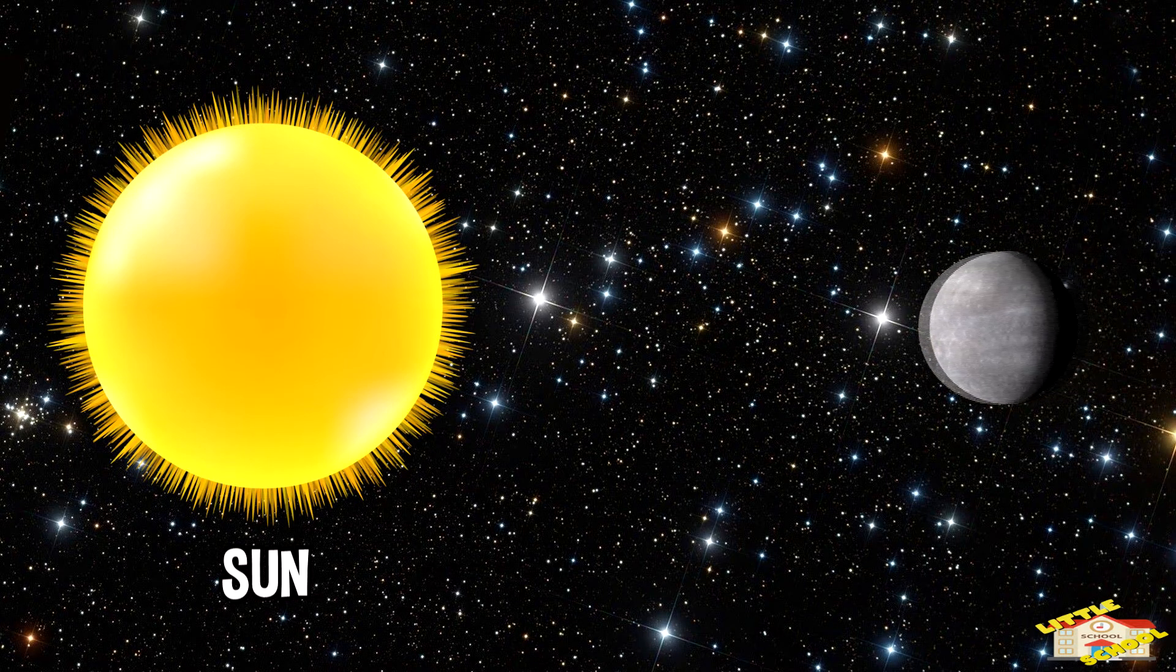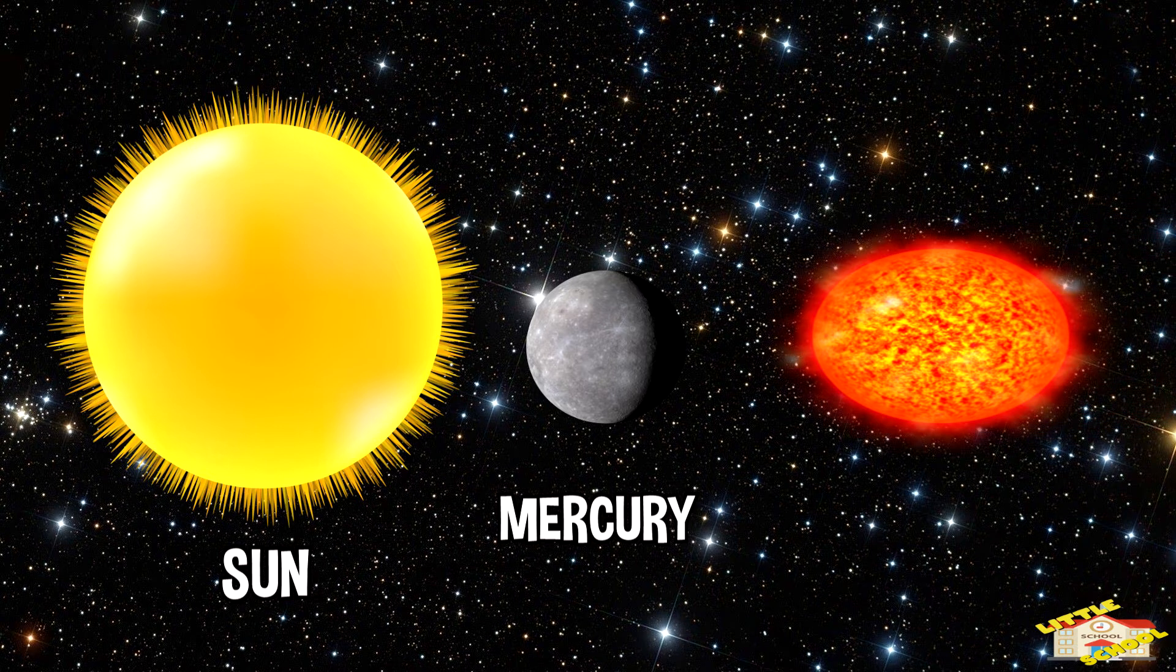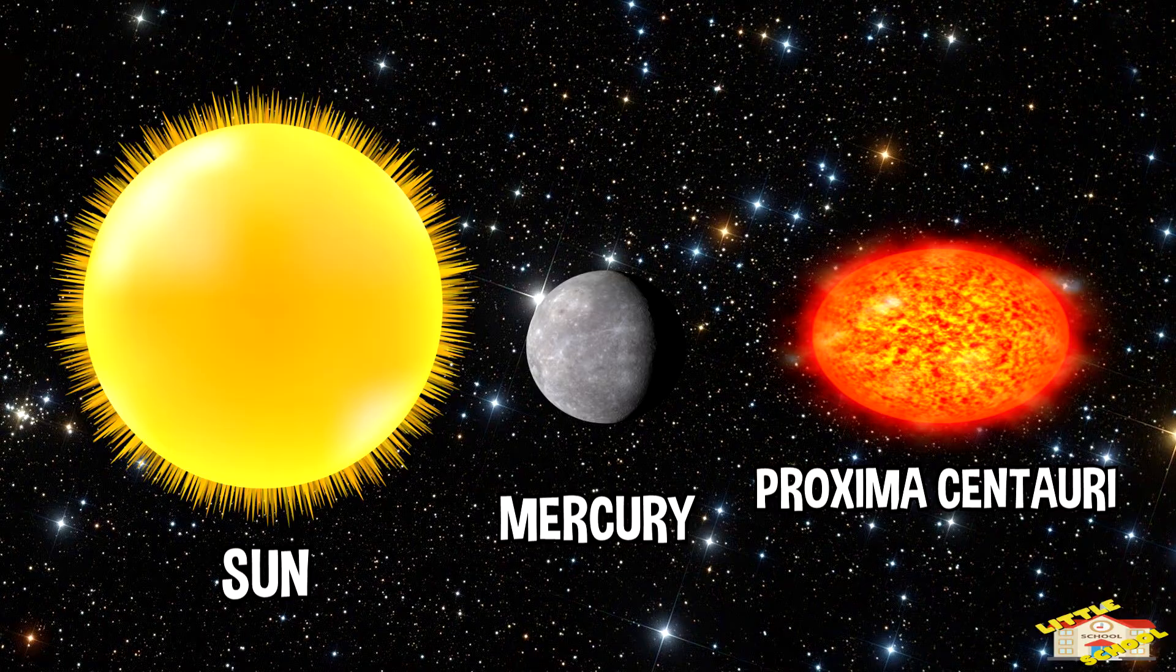In our solar system, the closest planet to the Sun is Mercury. Our Sun's closest star neighbor is called Proxima Centauri. It is approximately four light years away.